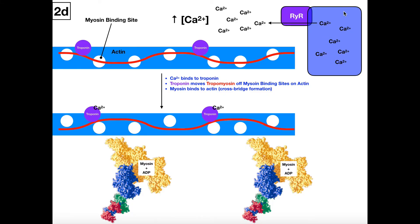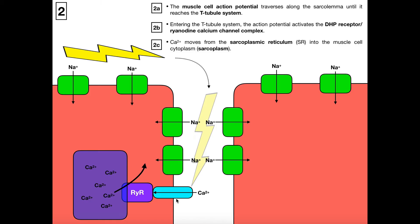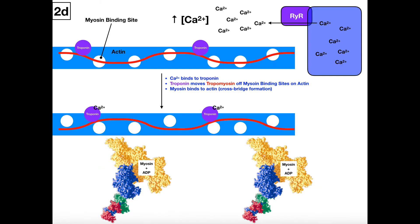Here's where we left off. We have our sarcoplasmic reticulum loaded with calcium, and through a conformational change, calcium moves into the sarcoplasm. We see calcium leaving through the ryanodine receptor, ultimately into the muscle cell cytoplasm or sarcoplasm. This calcium that's now in the sarcoplasm is going to lead us to cross-bridge cycling and the sarcomere.